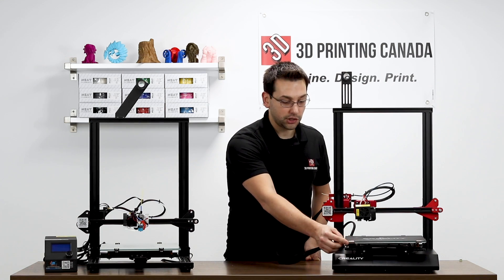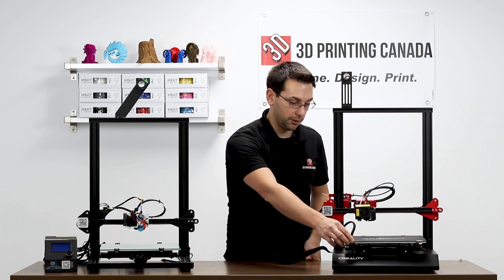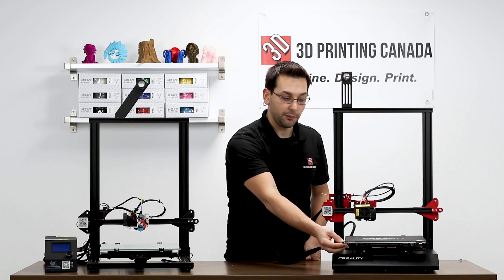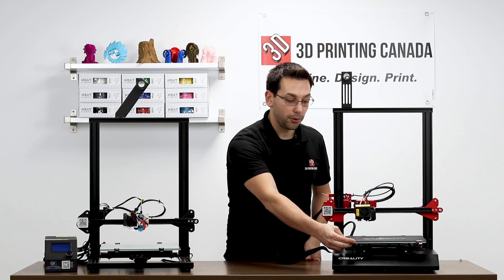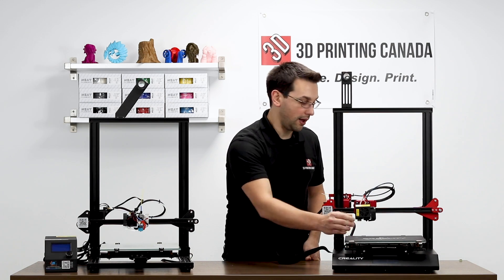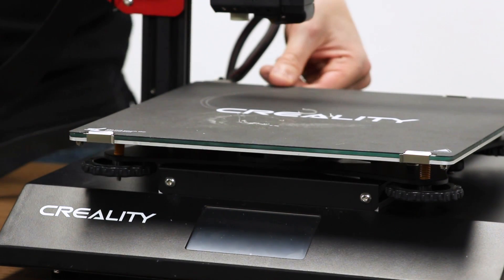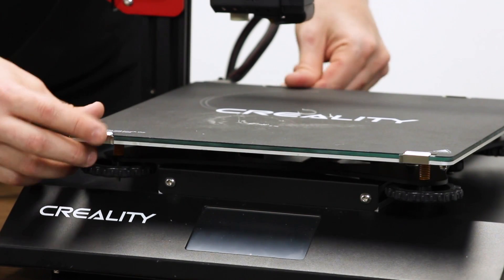They've changed the way that they've attached the glass onto the aluminum build plate. They've used these clips that we saw originally on the CR-X that are very low-profile. They swing out from the front, and then you would slide the glass out from the back. The back ones are stationary. So that's nice.